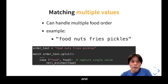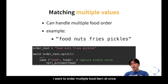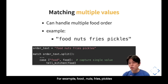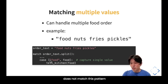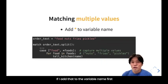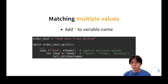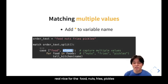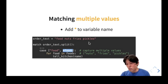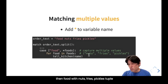For matching multiple values, suppose I want to order multiple food items at once — for example, ['food', 'nuts', 'fries', 'pickles']. A regular sequence pattern handles only a single food item and won't match. If I add a star to the variable name, like *foods, multiple values are assigned to the foods variable. Now I can order multiple food items at once, and the result is foods = ('nuts', 'fries', 'pickles').